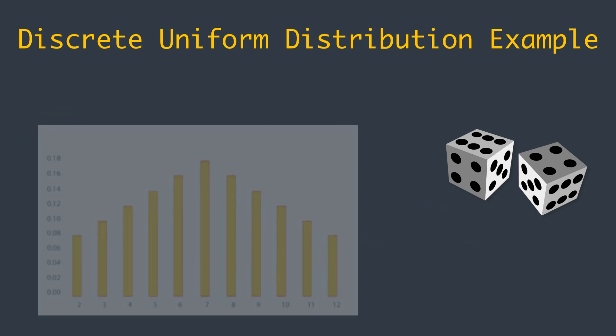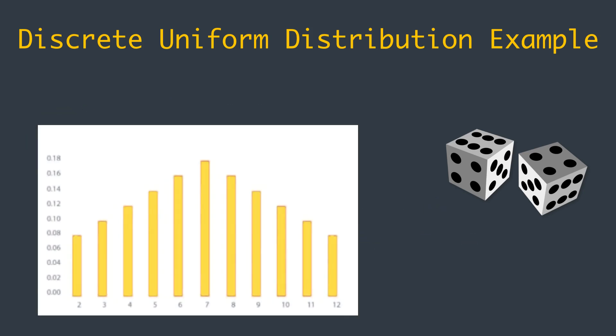And here's the graphical representation of this example. Looking at it, we can easily understand that when rolling two dice, the probability of getting a 7 is the highest.